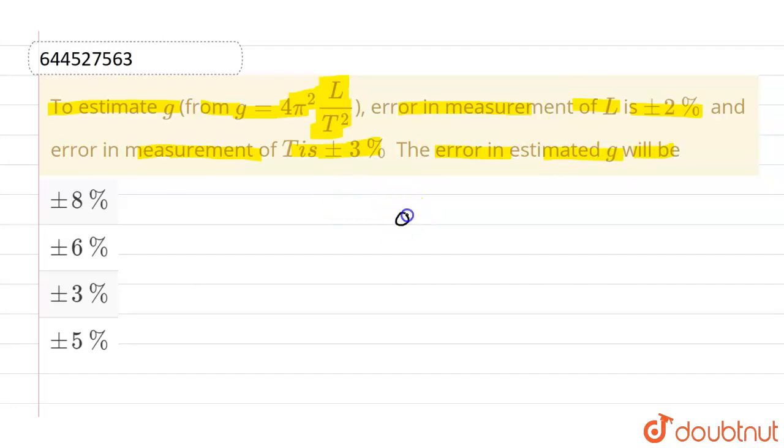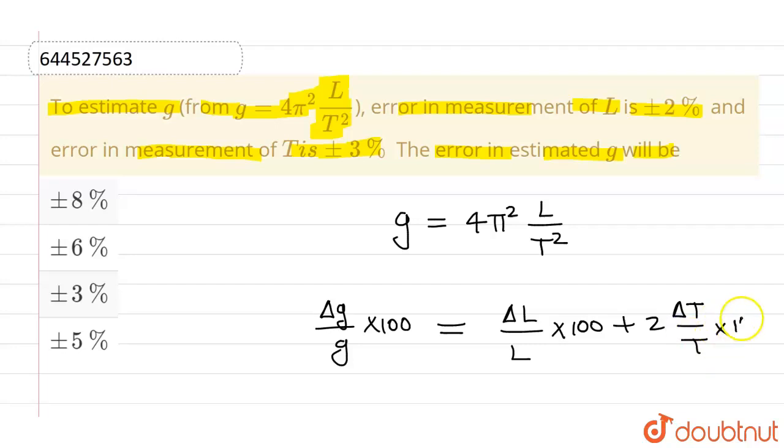As we can see, g is given as 4π²L/T². Now if I try to write its error form, which can be written as Δg/g × 100, which is the percentage error in g. This will be equal to ΔL/L × 100 plus 2 times ΔT/T × 100.